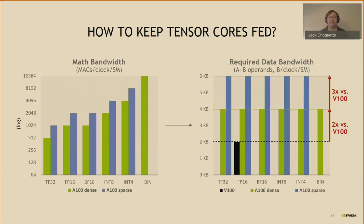The key challenge is how we keep the TensorCore fed. The math bandwidth chart shows required data bandwidth to supply operands to the TensorCores for different data types, measured in kilobytes per clock per SM. TensorCores consume a massive amount of data, and A100's faster TensorCores dramatically increase the bandwidth demand. Dense operations consume input data twice as fast as V100, and sparse operations consume data three times as fast. For sparsity, the math rate is doubled, but only the weights are compressed, not the activations.